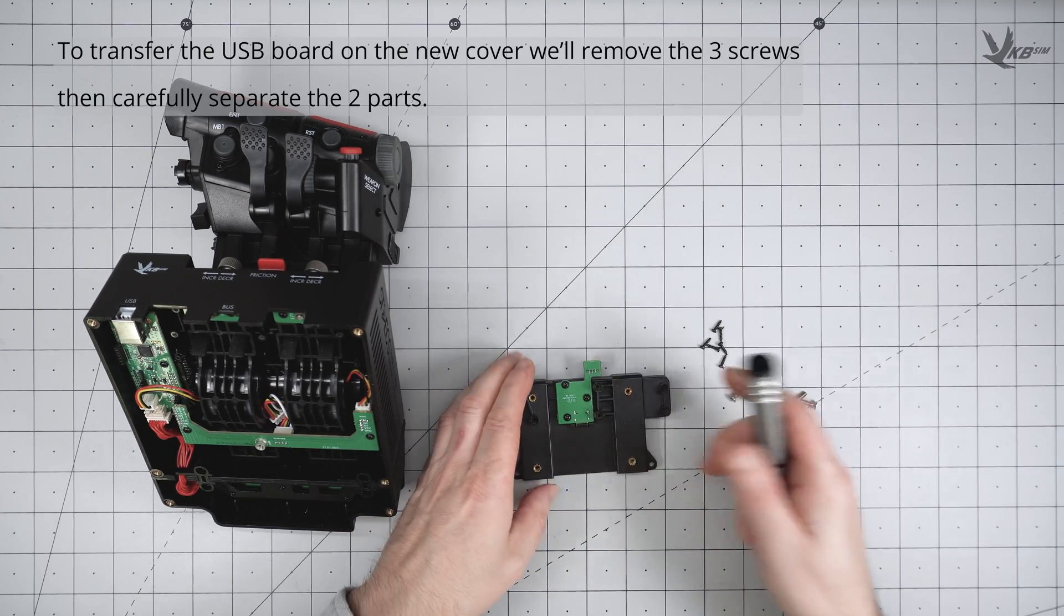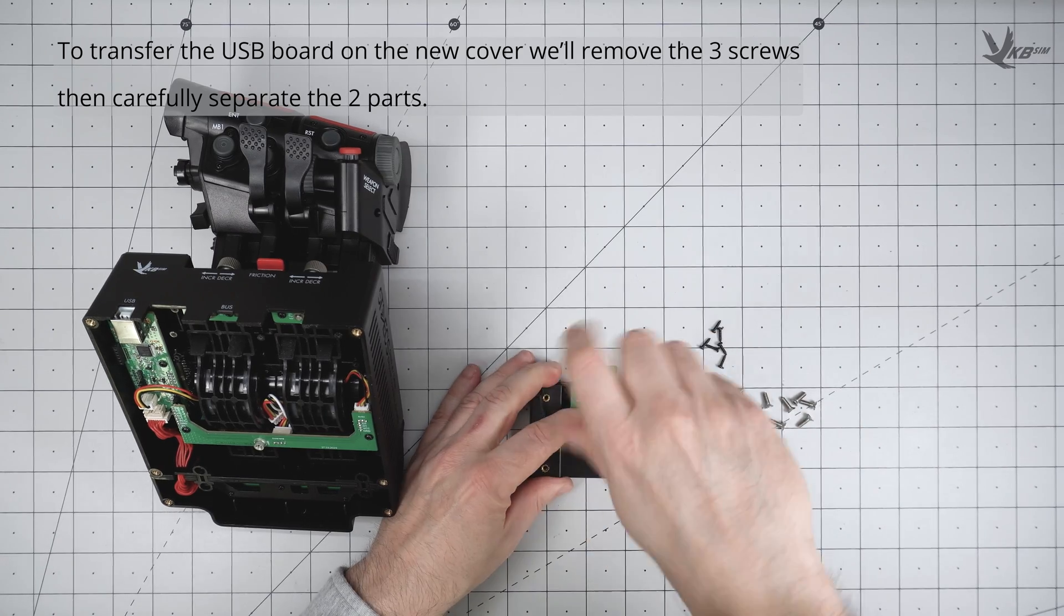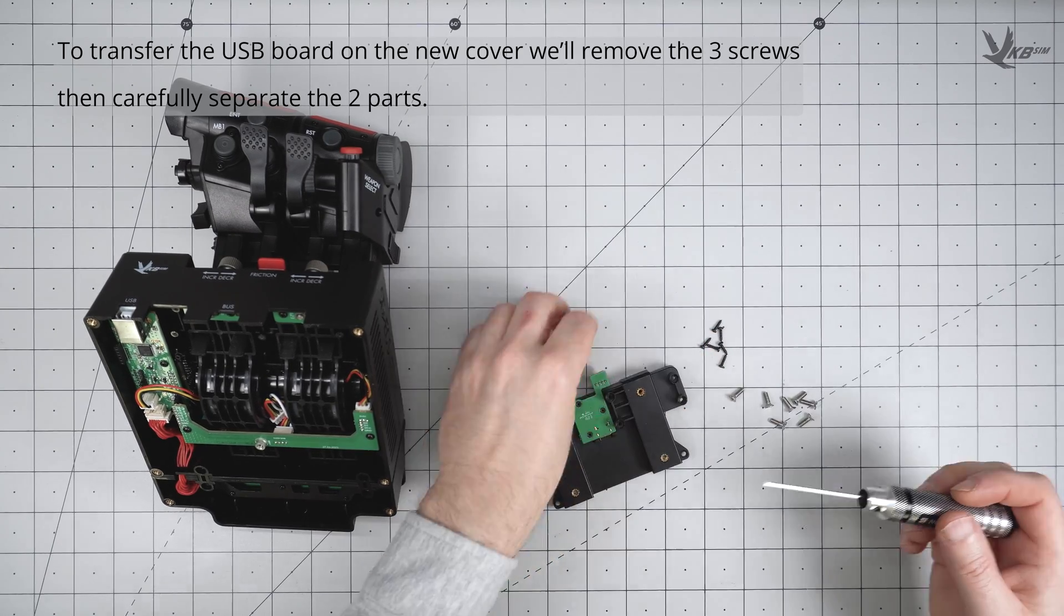We'll now be transferring the USB board to a new cover. Unscrew the 3 tiny screws holding the board to the cover, and then carefully separate them.